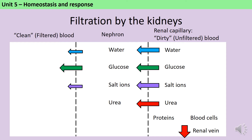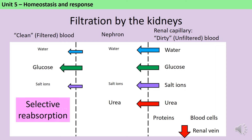If you look at the nephron you'll see that the levels of water and salt ions go down a little bit as some is reabsorbed, all of the glucose is taken back into the blood, but the urea is left behind. Because we're only taking some things and not others, we call this process selective reabsorption. The urea, together with the remaining water and salt ions, then passes through the ureter to the bladder to be urinated out.